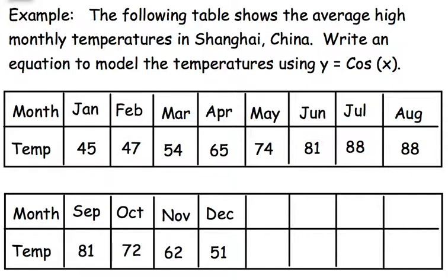Alright, so these are pretty big numbers here. They're already out on your PDF. So 45 degrees in January, 47 degrees in February, and then you'll continue on and see.